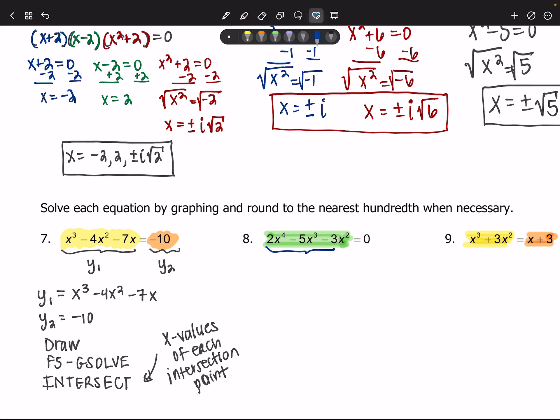However, on number eight, we just have a y1. So you're going to put y1 equals 2x to the fourth minus 5x cubed minus 3x squared. Anything else that's in the other y values, delete those out, and then you're going to draw it.